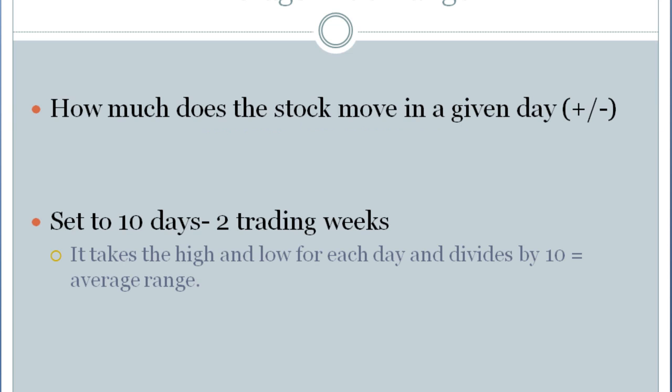So let's talk about what average true range is. It's really nothing magical — it's just a calculation. It takes the plus and the minus movement on a stock, and it averages it out over a period of time. Because of the short-term time frame that I'm looking at trading, I set mine to a 10-day average, which in the stock market would be two weeks.